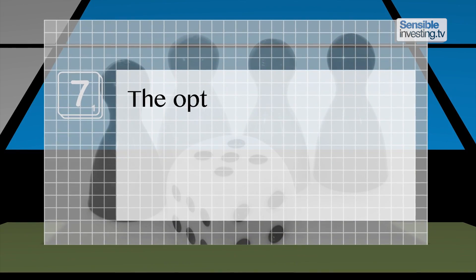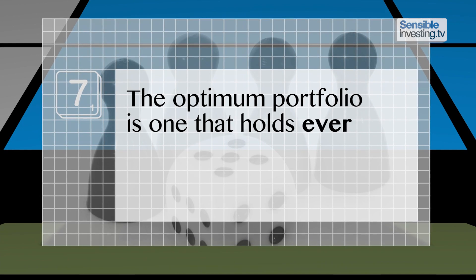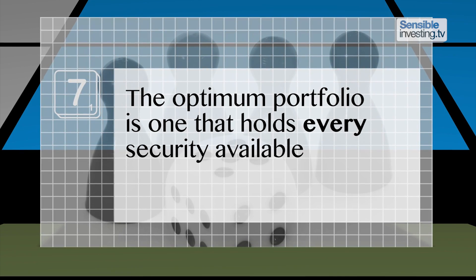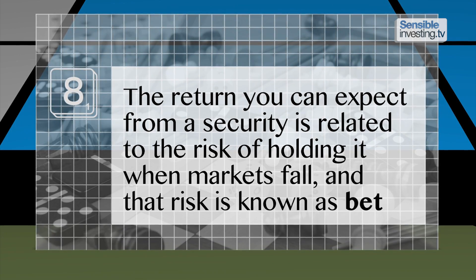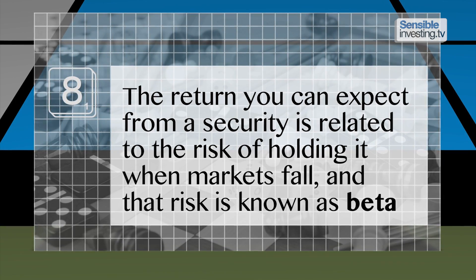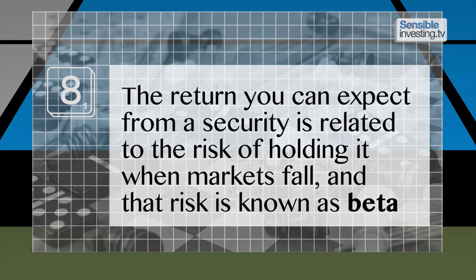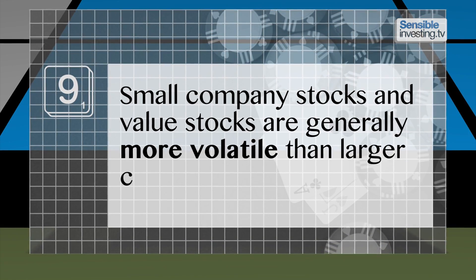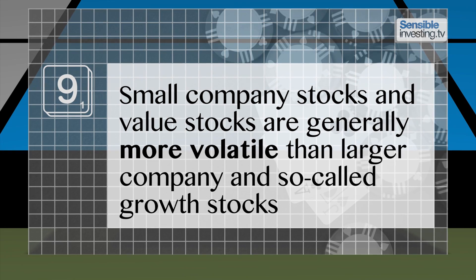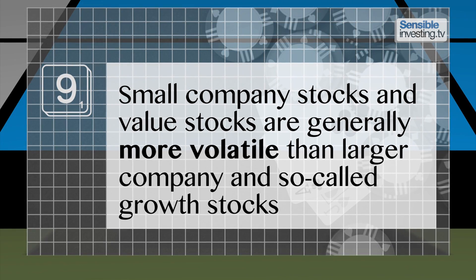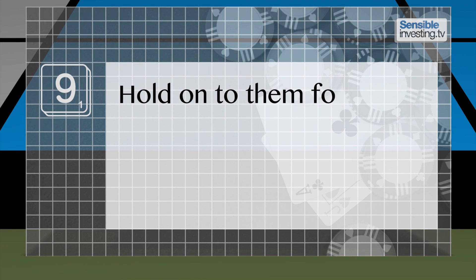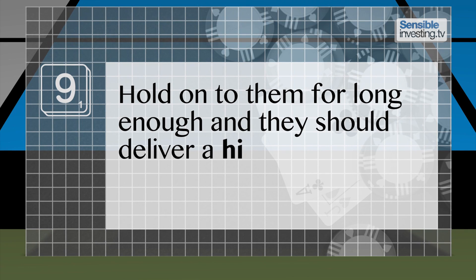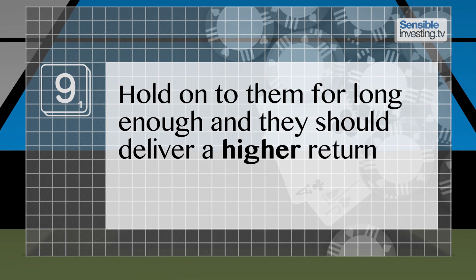The optimum portfolio is one that holds every security available. The return you can expect from a particular security is related to the risk of holding it when markets fall, and that risk is known as beta. But there are different types of risk you can expose yourself to. Small company stocks and value stocks, for example, are generally more volatile than larger company and growth stocks, but if you hold on to them for long enough, they should deliver a higher return.